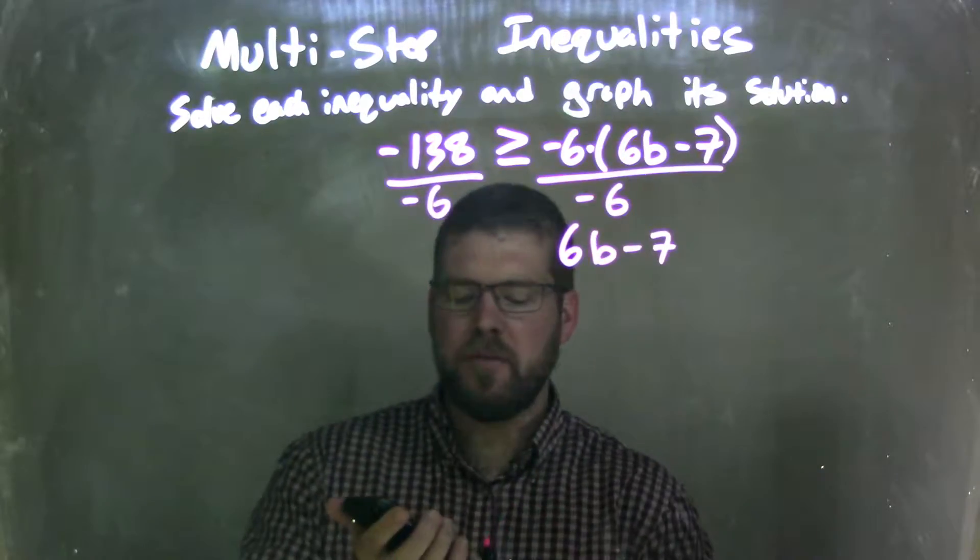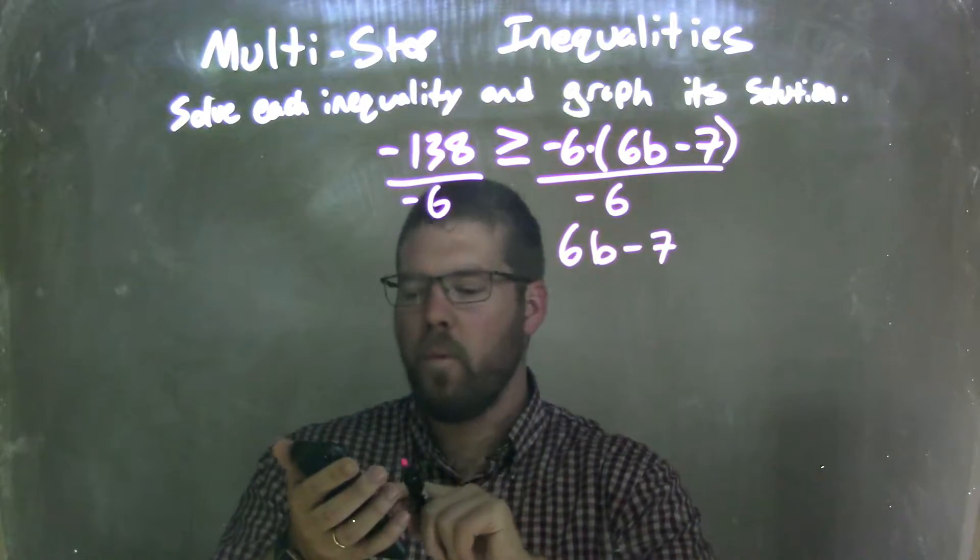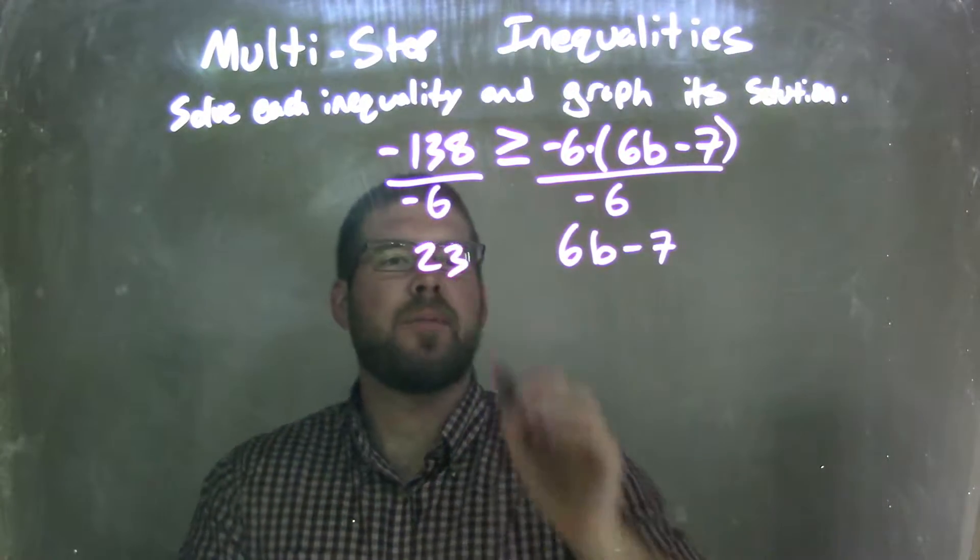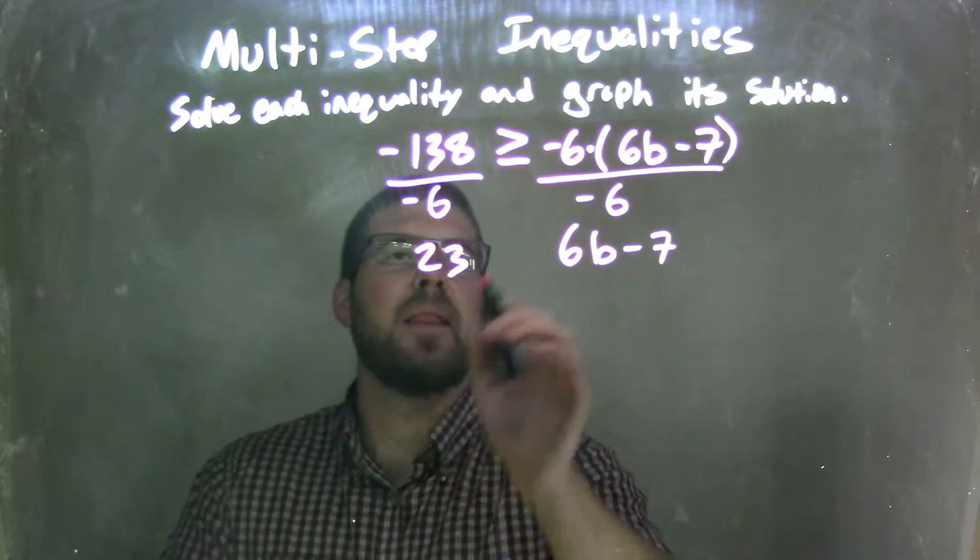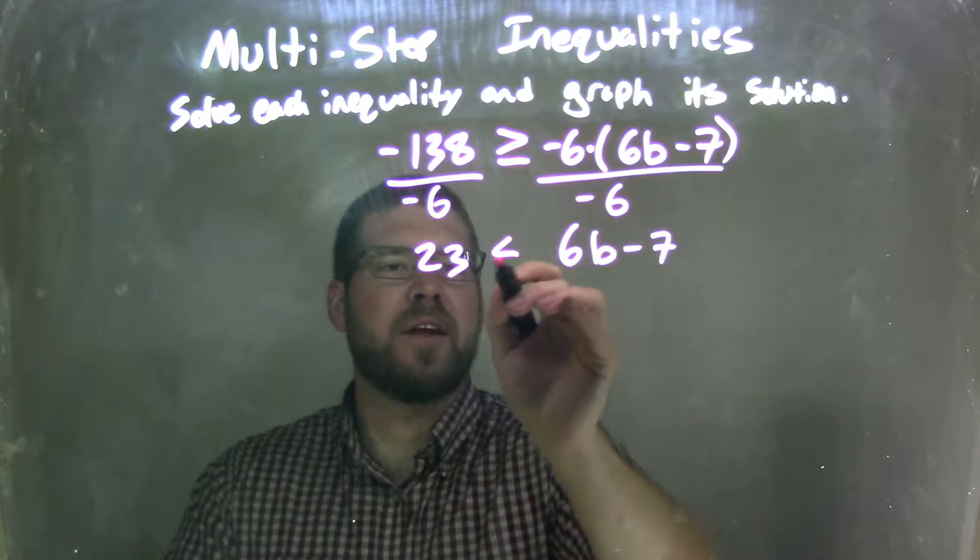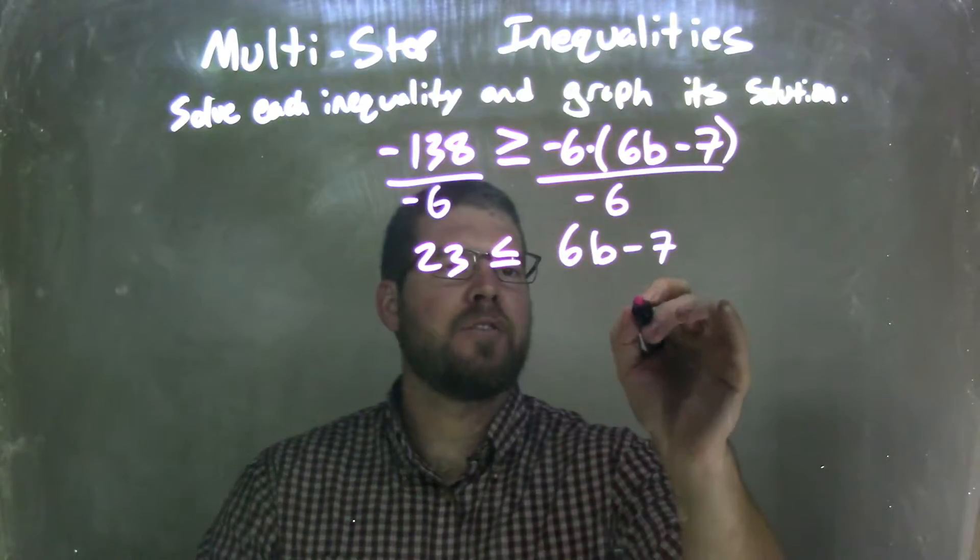and then negative 138 divided by negative 6. 138 divided by 6 is 23. Now it's a positive 23 because a negative divided by a negative is a positive, and then I need to flip my inequality from a greater than or equal to sign to a less than or equal to sign because we divided by a negative over that inequality.